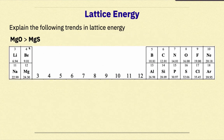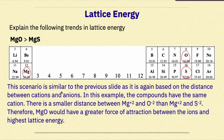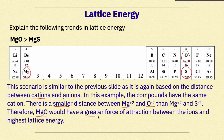MgO has greater lattice energy than MgS. Mg is in period 3, oxygen is in period 2, and sulfur is in period 3. This scenario is again based on distance between cations and anions. Both compounds have the same cation. There is a smaller distance between Mg2+ and O2- than between Mg2+ and S2-, as the ionic radius of oxygen is smaller than that of sulfur. Therefore, MgO has a greater force of attraction and the highest lattice energy.